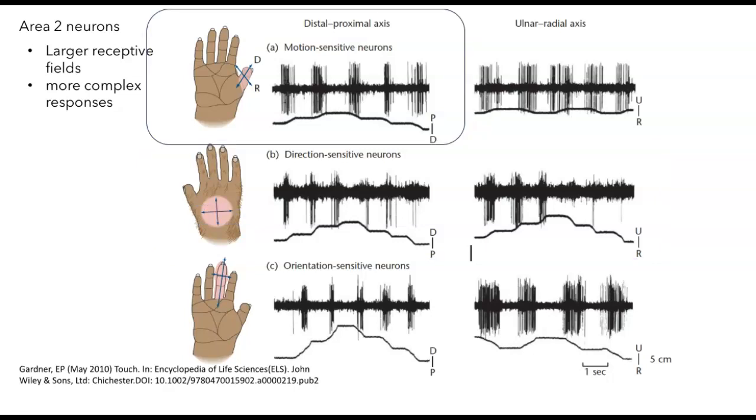There are also neurons that don't care about direction but are just sensitive to motion. Here's an example. When they stimulate starting at the base of the thumb, move out towards the thumb, and then come back, each time they move, whether it's out towards the thumb or from the thumb down towards the palm, there's a burst of action potential. So these are motion-sensitive, but they're not direction-sensitive.